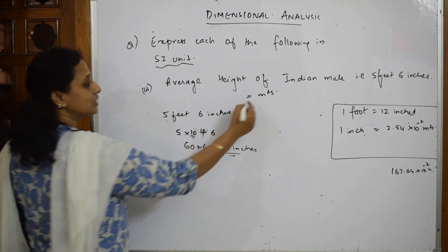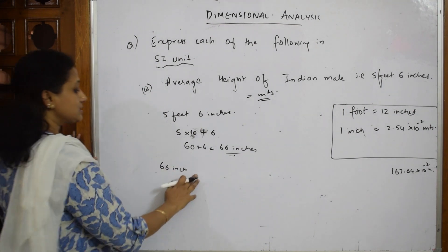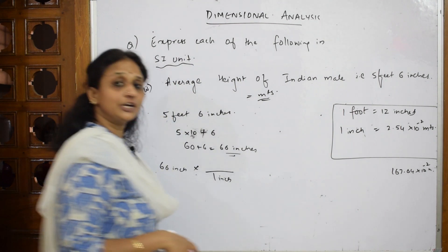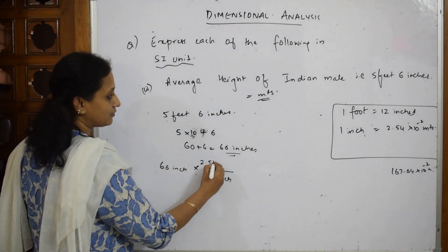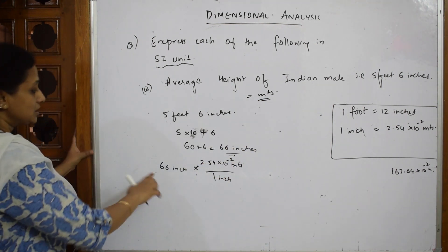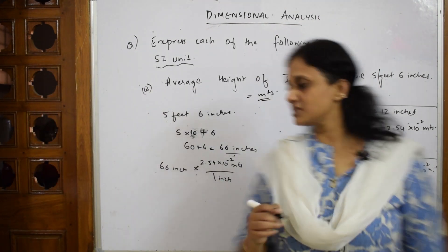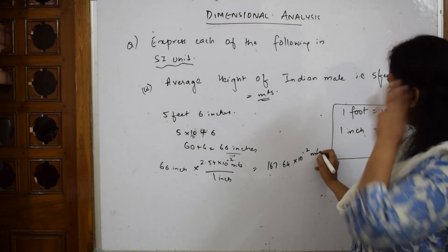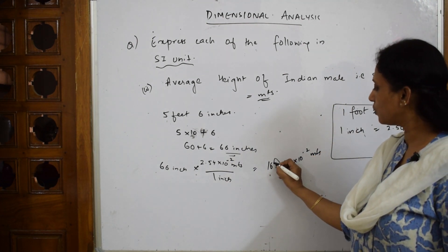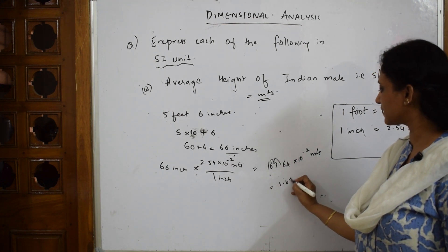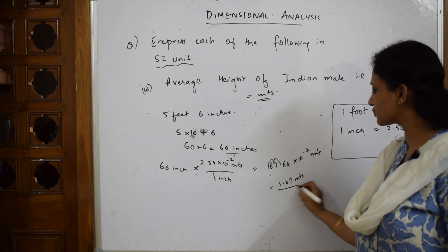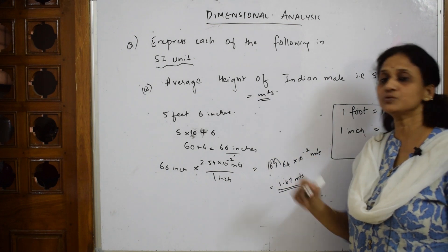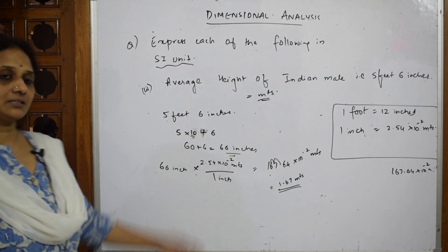Take 66 inches, divide by 1 inch to cancel. 1 inch = 2.54 × 10⁻² meters. Multiply: 66 × 2.54 × 10⁻² = 167 × 10⁻² meters. Shift the decimal: 1.67 meters. So 5 feet 6 inches converts to 1.67 meters, which is the SI unit for height.